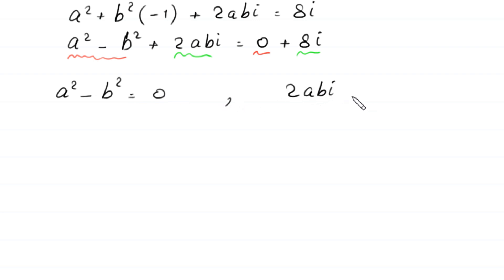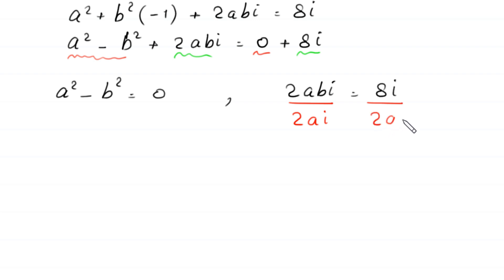From the imaginary equation 2abi equals 8i, to find the value of b we divide both sides by 2ai. The 2a cancels, and we are left with b is equal to 4 over a.